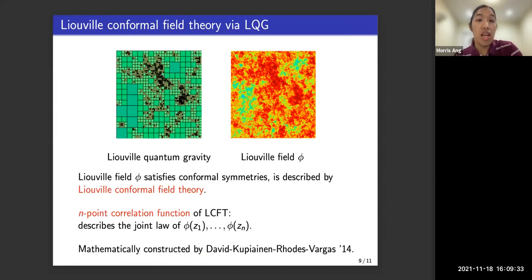So Liouville quantum gravity can be described by a random field called the Liouville field, which says how large the surface is at each point. So here, where the geometry is dense, the field is going to be very large, as shown by the red color. And here, where the geometry is not dense, the field is very negative. So this Liouville field phi is described by what is called Liouville conformal field theory. And the n-point correlation functions of LCFT, Liouville conformal field theory, describe the joint law of this function phi at n different points.